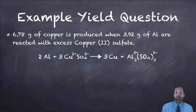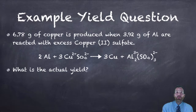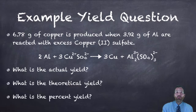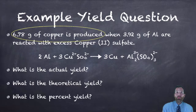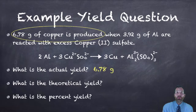You better hope that you get a question that's already balanced for you. Now that we have the balanced equation in front of us, let's figure out these three types of yield — actual, theoretical, and percent yield. The actual yield comes right from the problem: they said that 6.78 grams was actually produced. This is what the scale said, so that is our actual yield.